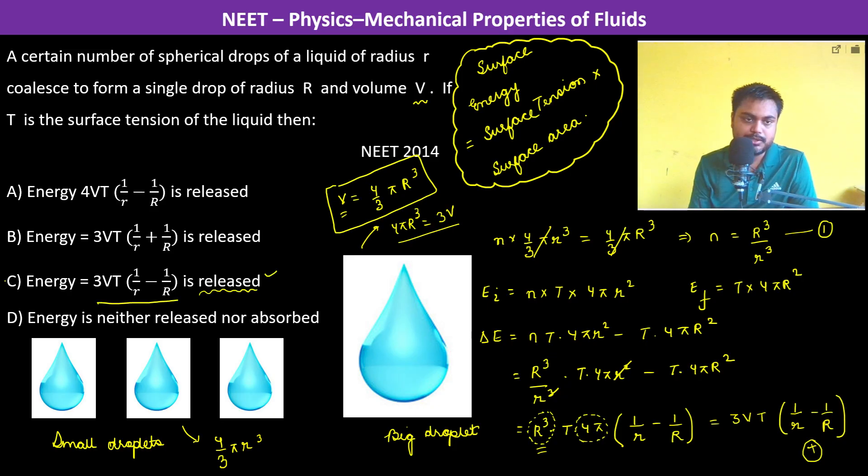So therefore the option is going to be C. I will just summarize. So firstly what we did was we found out the total volume. The total volume has to remain same. And then we found the energy difference, initial energy minus the final energy. That amount of energy has to be released. And what is the formula of energy? The surface energy is surface tension into the surface area. Thank you.